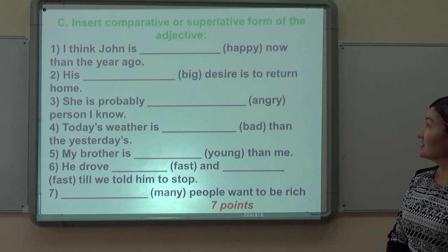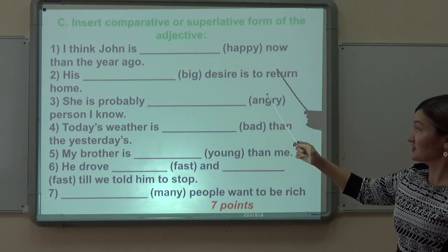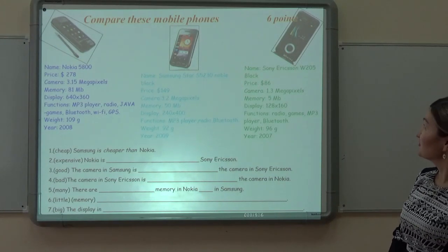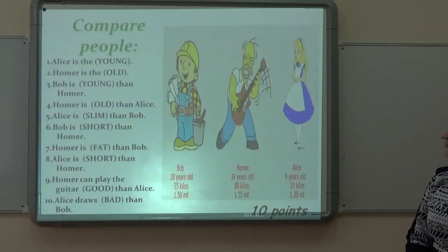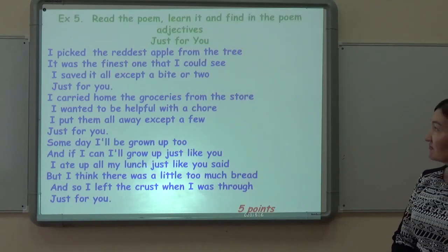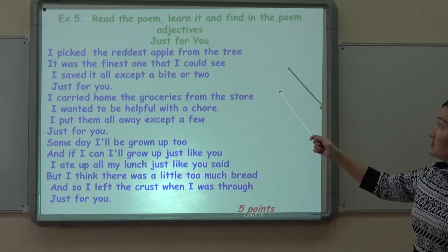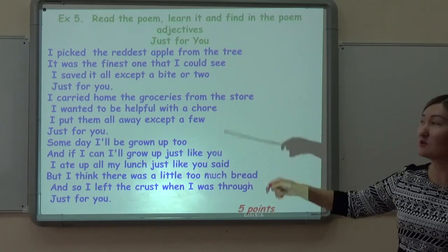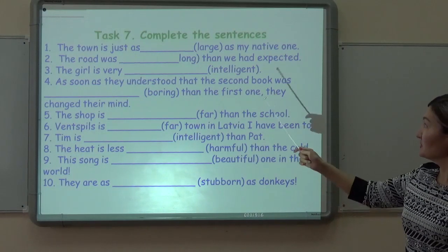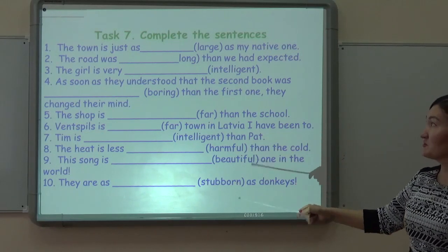In this exercise, you have to insert the comparative or superlative form of adjectives. In the next exercise, compare the mobile phones. Then compare the people. Exercise 5: read the poem, learn it, and find adjectives in the poem. You should learn this by heart. Task 7: complete the sentences using the comparative or superlative form of adjectives of comparison.